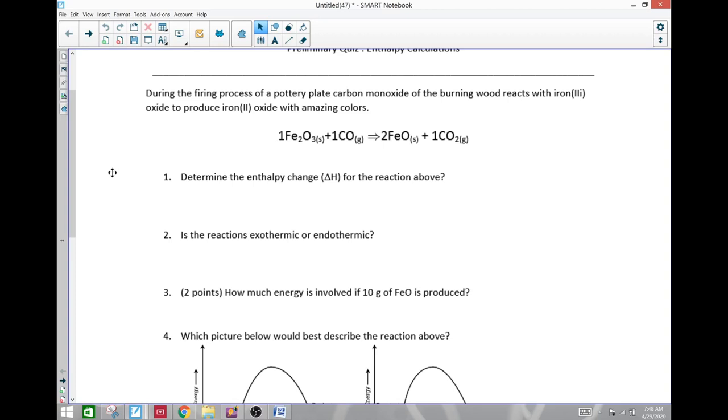So it says during the firing process of a pottery plate, carbon monoxide of wood burning reacts with iron, that's iron 3 oxide, to produce iron 2 oxide with amazing colors. Start with the enthalpy change of this reaction above. Okay, so we're going to need our enthalpy tables for this particular opportunity.